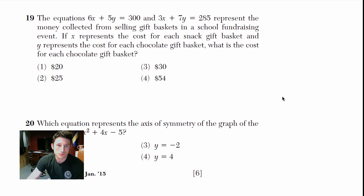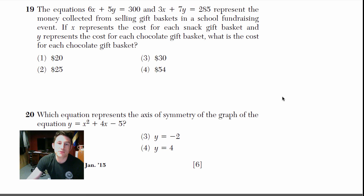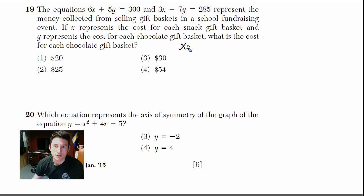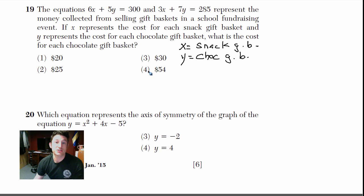Number 19: the equations 6x plus 5y equals 300 and 3x plus 7y equals 285 represent money collected from selling gift baskets. X is the cost of each snack gift basket and y is the cost of each chocolate gift basket. What is the cost per chocolate gift basket? So: x equals snack gift basket, y equals chocolate gift basket.